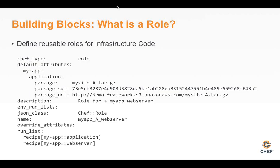Right next to roles, you have what we call an environment. An environment can be used for versioning of cookbooks. By default all cookbooks are versioned, and in an environment you can constrain those versions. You might have a development environment where you're not constraining cookbook versions, but a production environment where only specific versions of cookbooks are allowed to run. Any node that is part of production gets those constraints, and I'll show you what that looks like in the demo.